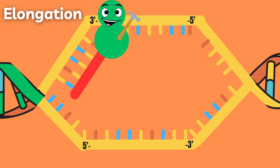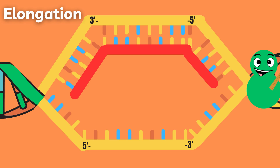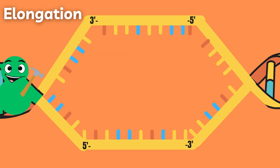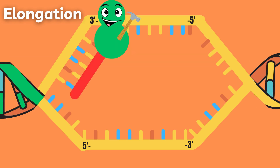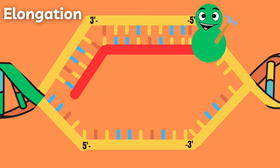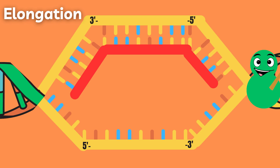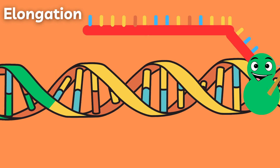During elongation, the RNA polymerase starts producing mRNA at the start codon and then continues downstream along the gene, reading the template strand in the 3' to 5' direction. RNA polymerase zips the DNA back up together as it goes, keeping only 10 to 20 bases exposed at a time.